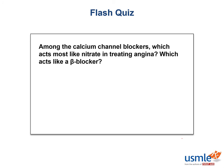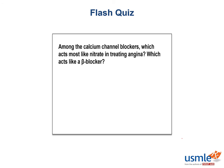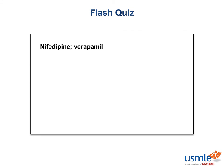Flash quiz time! Among the calcium channel blockers, which acts most like a nitrate in treating angina, and which acts most like a beta blocker? The answers are nifedipine and verapamil, respectively. The dipines drop blood pressure by arteriolar dilation, while the non-dihydropyridines tend to cause a decrease in cardiac output by decreasing heart rate and contractility.